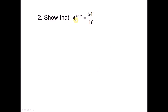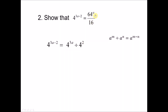Now we look at the second type of question: 'show that' proofs. For example, show that 4 to the power of 3a minus 2 equals 64 to the power of a over 16. For this type, you take either the left-hand side or the right-hand side to start. Taking the left-hand side: 4 to the power of 3a minus 2. The negative 2 means we split using the formula a to the power of m minus n equals a to the power of m divided by a to the power of n. So we get 4 to the power of 3a divided by 4 squared. Since 4 cubed is 64 and 4 squared is 16, this matches the right-hand side. For the next example, the plus 2 means we split as 9 to the power of 2a multiplied by 9 squared, and since 9 squared is 81, we rewrite as 81 times 81 to the power of a.